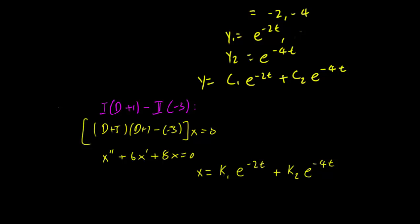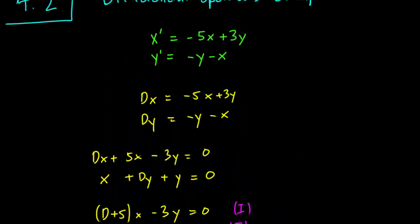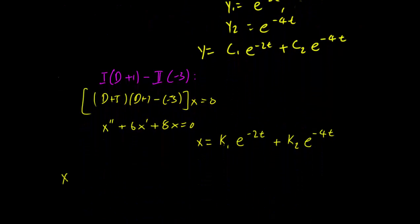We're not done yet. Usually this method results in more constants than necessary. Because we have a second-order differential equation, we expect two constants rather than four. The next step is to reduce the number of constants. We take the first original equation — it makes no difference which one — so we use x prime equals minus 5x plus 3y.